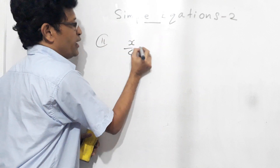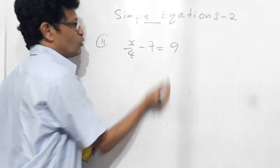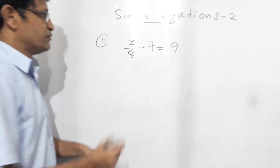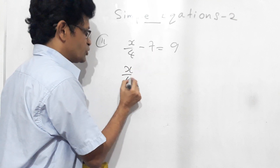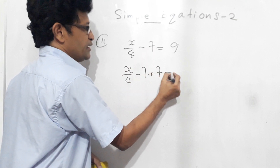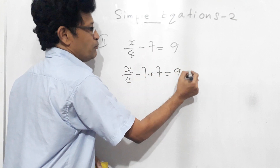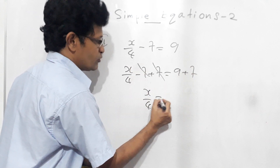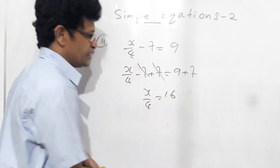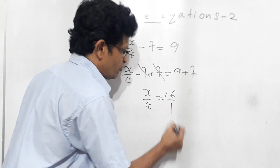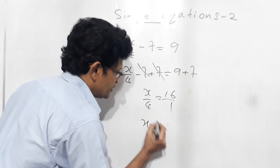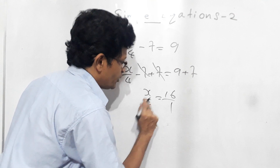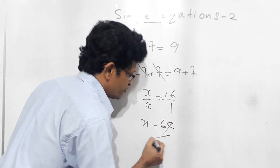Eleventh question: x over 4 minus 7 equals 9. Add plus 7 to both sides to cancel the minus 7 — leaving x over 4 equals 16. Since 16 means 16 over 1, cross multiply: 1 into x equals 4 times 16, which is 64. So x equals 64.